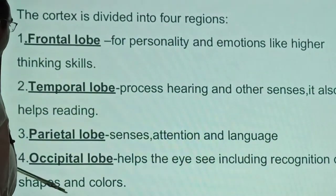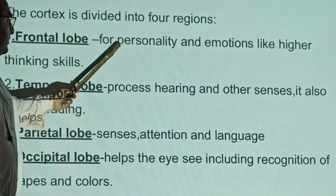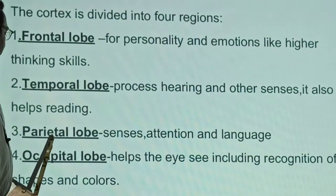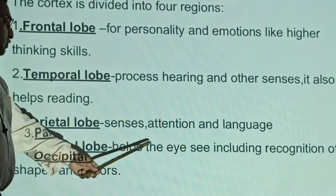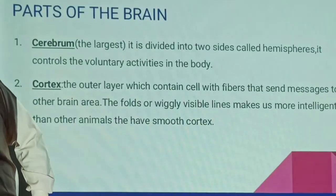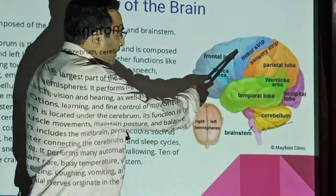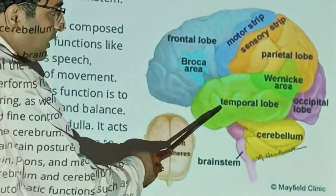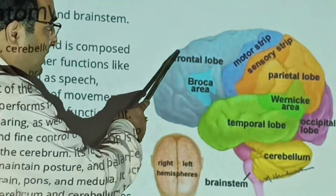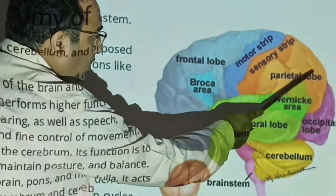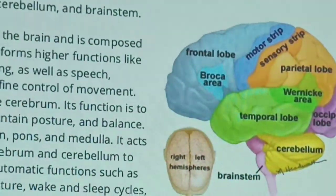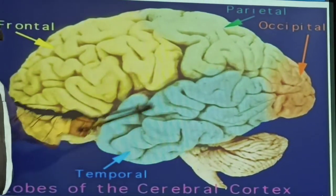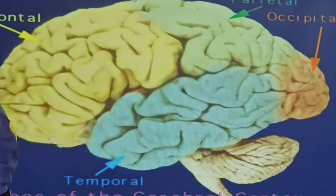The cortex is divided into four parts. The frontal lobe is responsible for personality, emotions, and high-level thinking. The temporal lobe handles hearing. The parietal lobe deals with senses, attention, and language. The occipital lobe handles eyesight. These are the four lobes of the cerebrum, each with different functions.